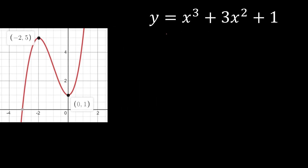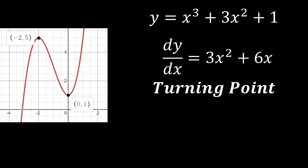To find the turning points, we know that at a turning point the gradient must be zero. So we find the gradient function first. Differentiating x³ + 3x² + 1: 3 comes down giving 3x², and 2 comes down giving 6x, and the derivative of a constant is zero. So the gradient function is 3x² + 6x. Setting dy/dx equal to zero: 3x² + 6x = 0.